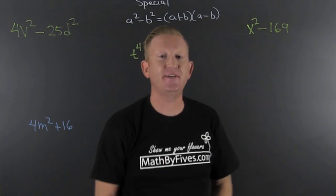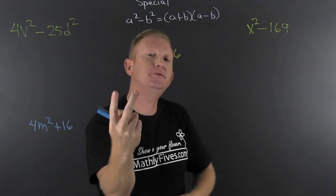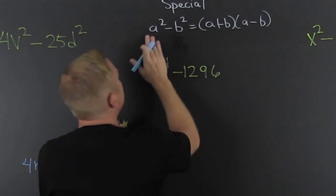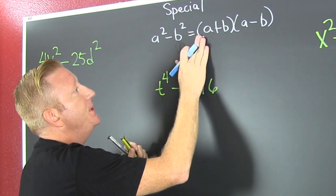Special factoring. What am I talking about? I'm talking about the difference of squares and factoring the difference of squares. When you see two terms, you want to look at the difference of squares. What is the difference of squares? If you have a squared minus b squared, that factors into a plus b times a minus b.